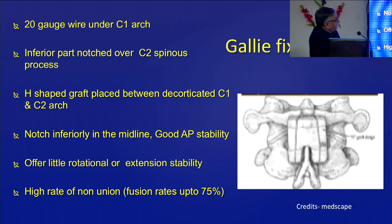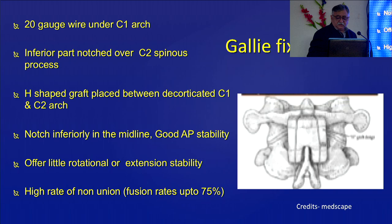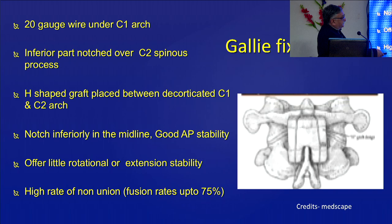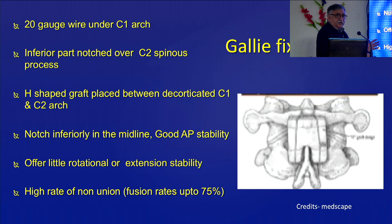Gally fixation has many variations: you can have the wire going under the C1 arch and fixed to the C2 spinous process, or under both the C1 and C2 arches, with different modifications by various surgeons. But the problem is it does not offer rotational stability — C1 and C2 can still rotate and the wires can become loose. If it does not fuse, the wires will break. The basic idea is to fuse the bone, and it worked well in quite a few cases, though rotational stability remained lacking. Fusion rates were still good.